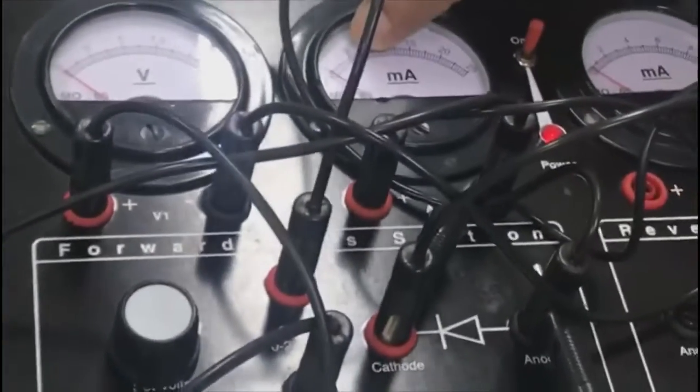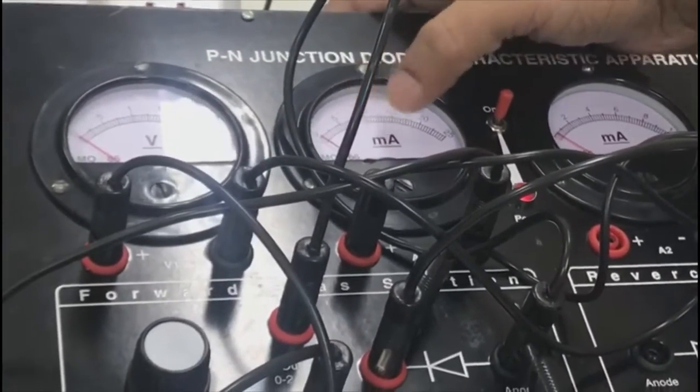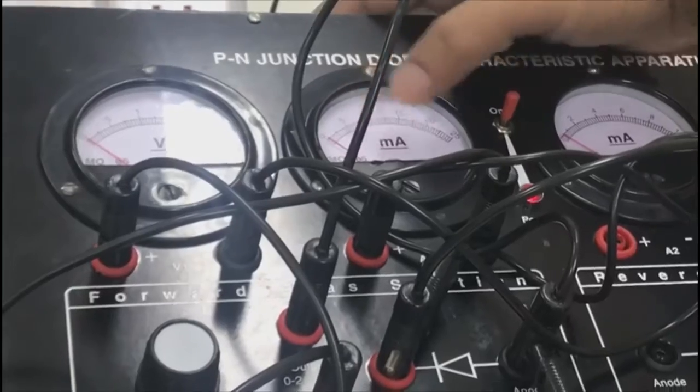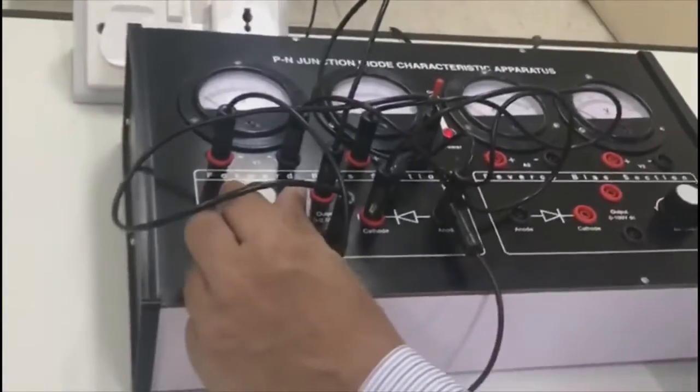For the milliammeter, 5 at 10 lines means 5 milliamperes, so one line will be 0.5 milliamperes. You can adjust the knob.